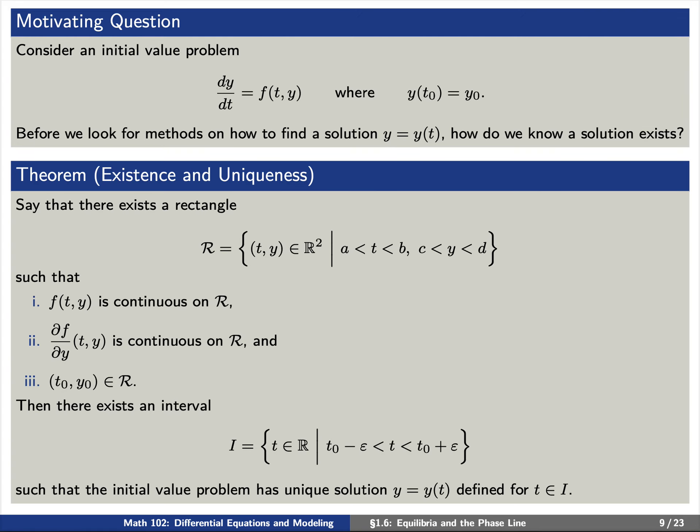Last time we were motivated by the following question. Say that we have an initial value problem: dy/dt equals f of t, y, where y of t₀ equals y₀. Before we look for solutions, how do we even know that a solution exists? Well, the following existence and uniqueness theorem guarantees that one exists.